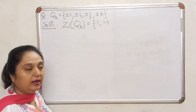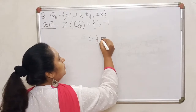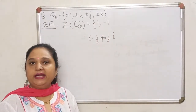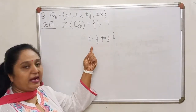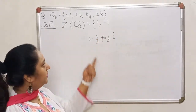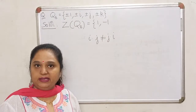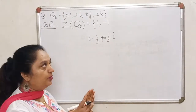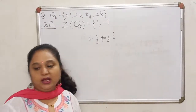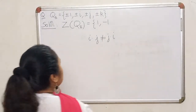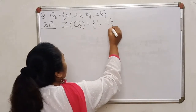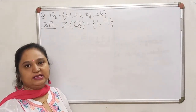On the other hand, if you look at i, i into j is not the same as j into i. So there is at least one element with which i does not commute. Therefore i does not lie in the center. For the same reason, j will not lie in the center. One can show that 1 and −1 are the only two elements which will lie in the center of the quaternion group.